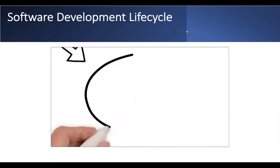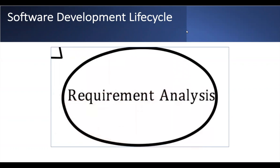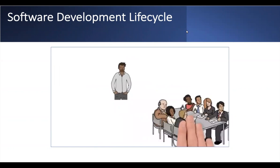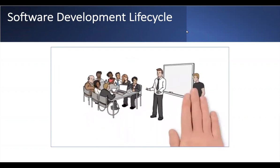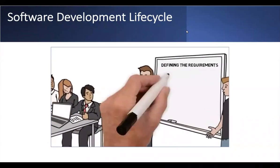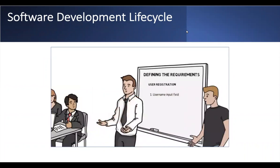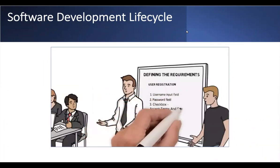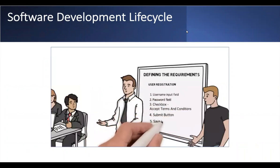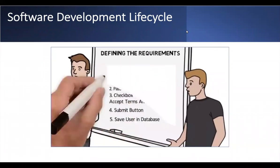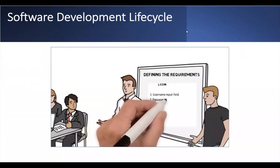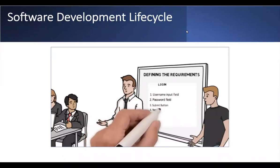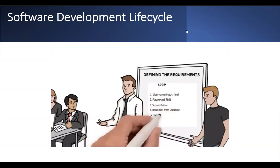Now that we have the outlined requirements, we move into the requirement analysis phase. The operations team, developers, product owners, and testers all meet at an office for a few hours to define each requirement in detail. Requirement one, user registration, needs a username input field, a password field, a checkbox to accept terms and conditions, a submit button, and the ability to save the user to the database. Requirement two, login, needs a login page with a username field, password field, submit button, and the ability to read user data from the database.